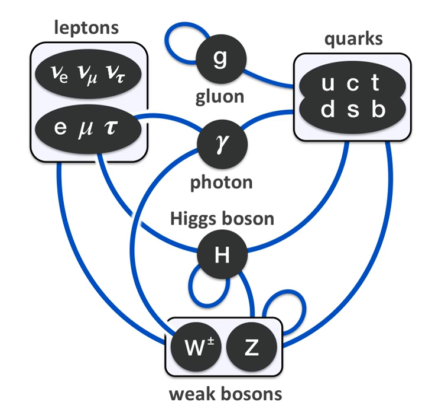Technically, quantum field theory provides the mathematical framework for the standard model, in which a Lagrangian controls the dynamics and kinematics of the theory. Each kind of particle is described in terms of a dynamical field that pervades space-time. The construction of the standard model proceeds following the modern method of constructing most field theories by first postulating a set of symmetries of the system, and then by writing down the most general renormalizable Lagrangian from its particle content that observes these symmetries. The global Poincaré symmetry is postulated for all relativistic quantum field theories. It consists of the familiar translational symmetry, rotational symmetry, and the inertial reference frame invariance central to the theory of special relativity.